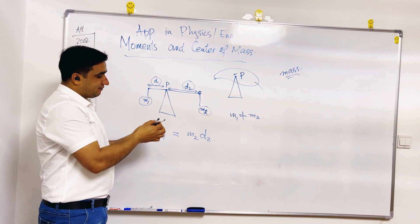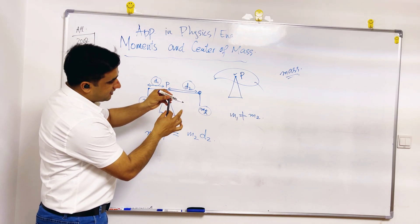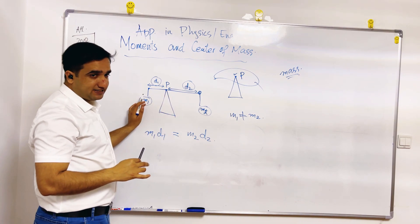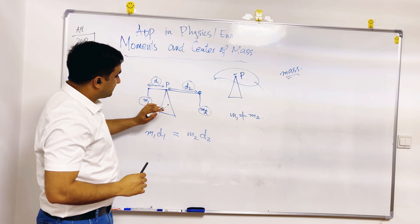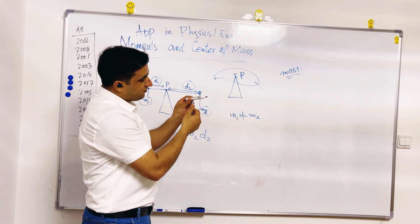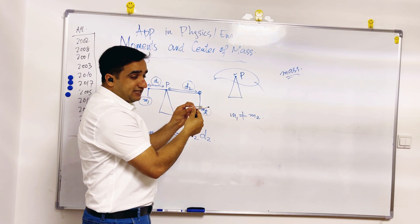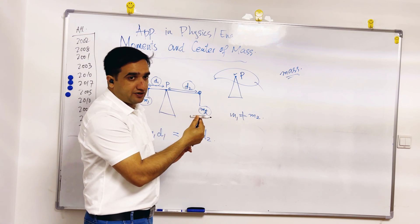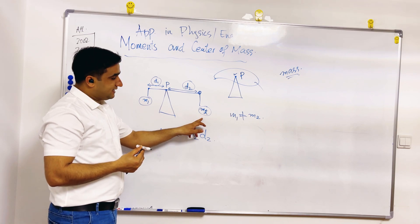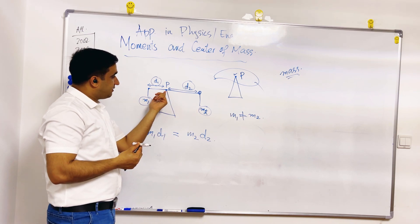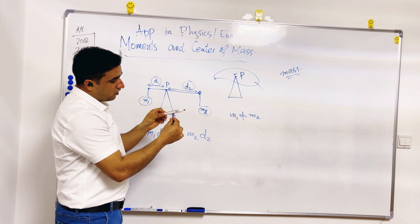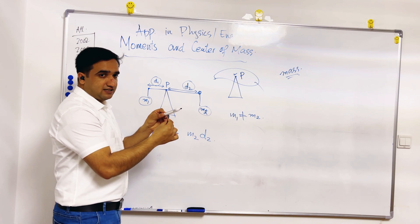If mass 2 is greater, the fulcrum will try to drop to that side. In the other case, if mass 1 is greater, it will drop the other way. But if we maintain the correct distances from the fulcrum, we can balance it whether the masses are the same or not. So if the masses are not the same, you change the distance by moving the object to some position.